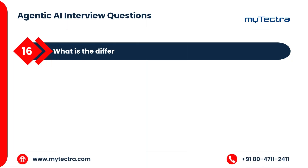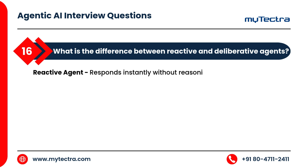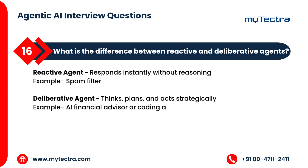What is the difference between reactive and deliberative agents? A reactive agent responds instantly without reasoning — for example, a spam filter. A deliberative agent thinks, plans, and acts strategically — for example, an AI financial advisor or coding assistant.